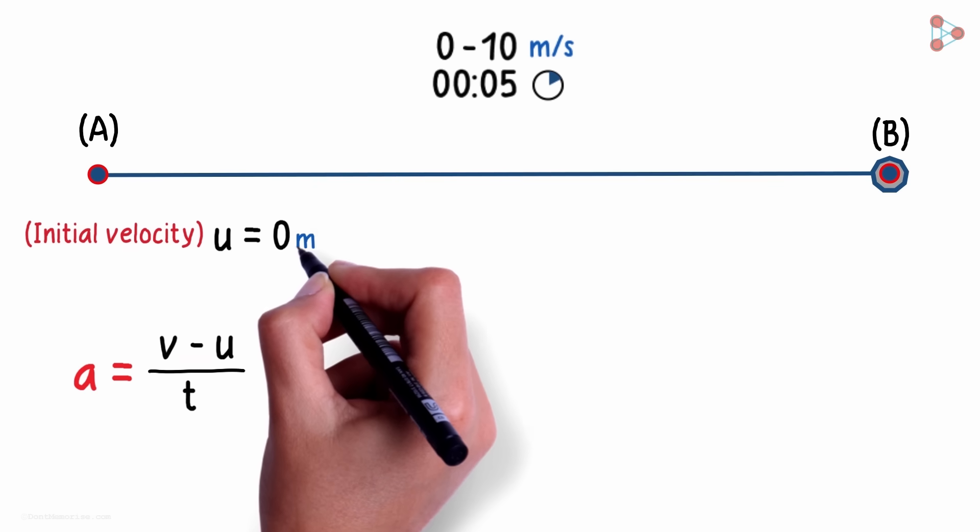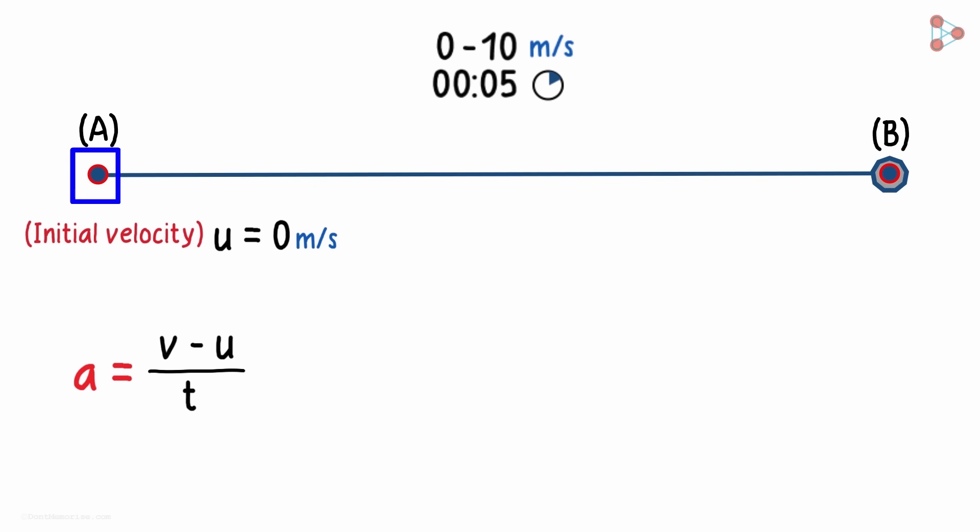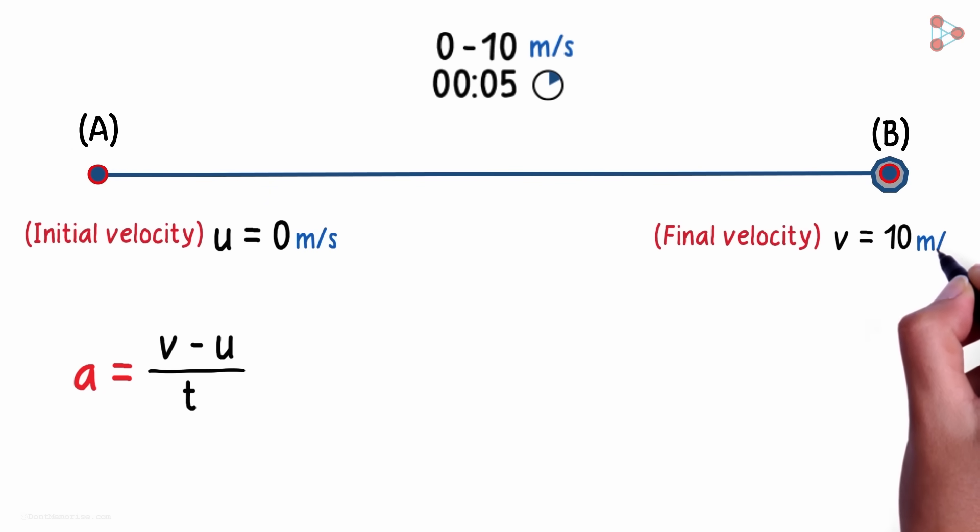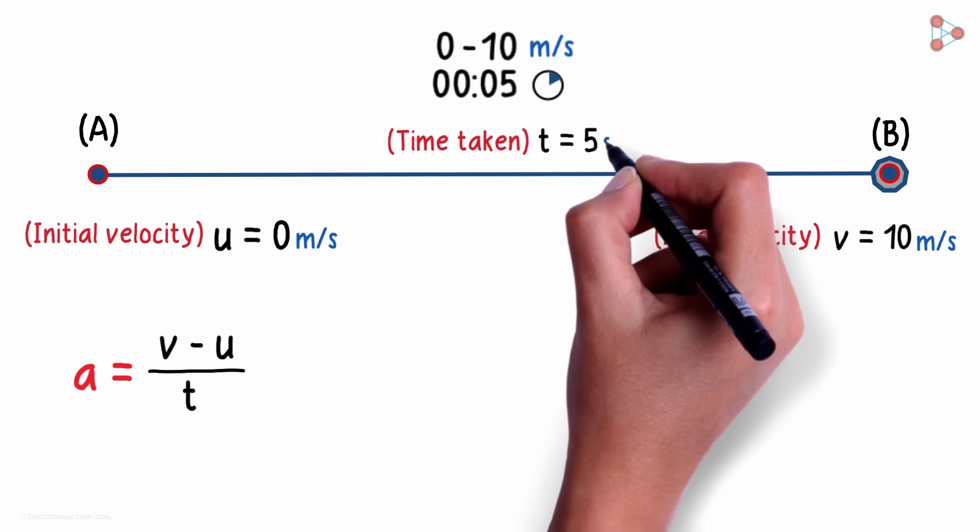Say this object is at rest initially at point A. It then travels to the right and attains a velocity of 10 m per second in 5 seconds. What will be the acceleration here at point B? We can look at the formula to get the answer. The initial velocity u is 0 m per second as the object is stationary. The final velocity v is 10 m per second and the time taken t is 5 seconds.